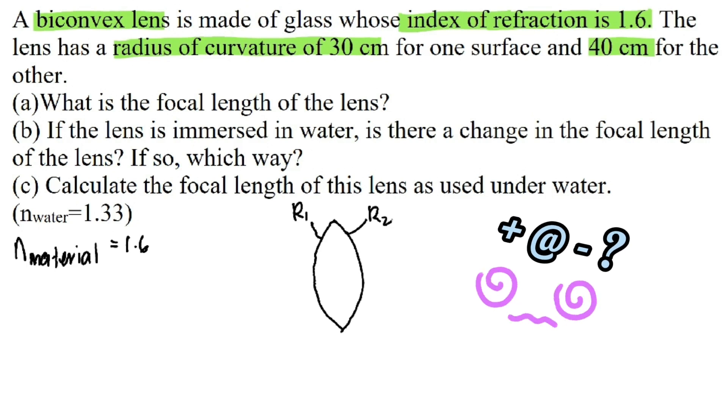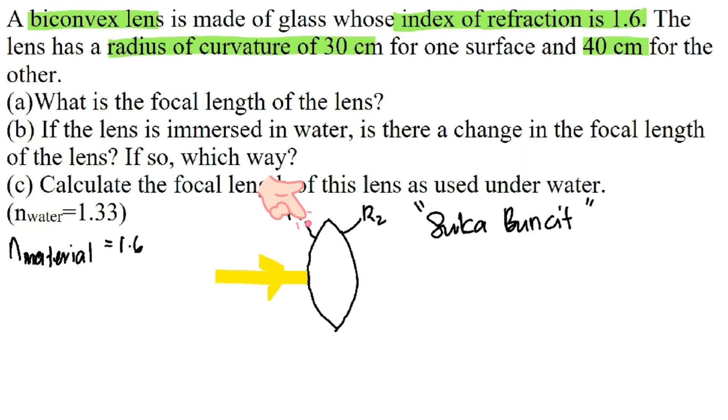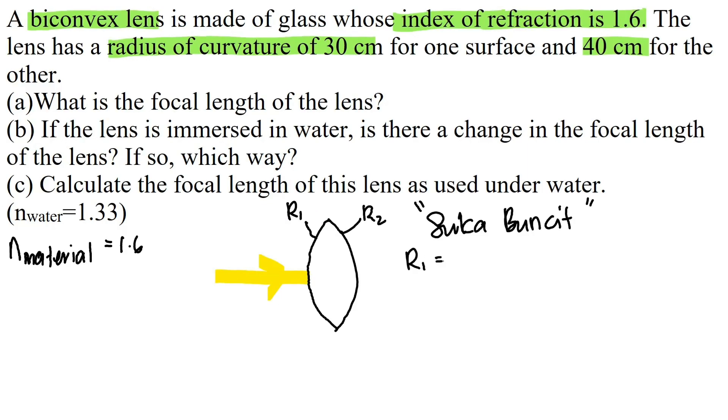Now I have to determine the sign for the R's. In order for us to know whether the sign is positive or negative, there's a technique I like to call sukaboncit. Here is how it works. Let's say this ray of light comes from the left. We can see that this is boncit, right? Hence the R1 is positive 30 cm.